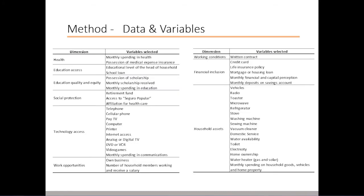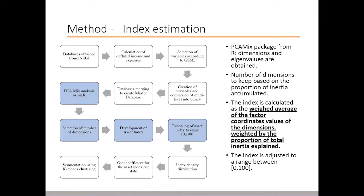Here is a list of the variables that we used. The PCAMix package from R was used and the dimensions and eigenvalues are obtained. The number of dimensions to keep is determined based on the proportion of total inertia accumulated. The index is calculated as the weighted average of the factor coordinate values of these dimensions, weighted by the proportion of total inertia explained. Finally, the value of the index is adjusted to a range between 0 and 100 to facilitate its interpretation.